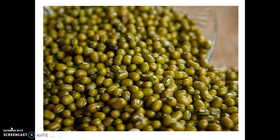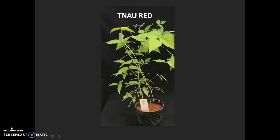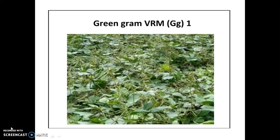In this experiment, the mapping populations are the two parental lines and 108 recombinant inbred lines. One of the parents is TNA ured, which is a Vigna ambedata accession and resistant to MYMV, and the other parent is Vrm-greengram-1, which is a Vigna radiata accession and susceptible to MYMV.